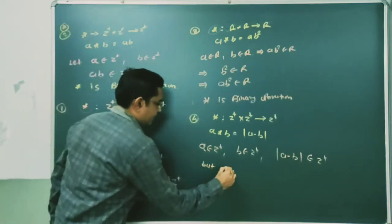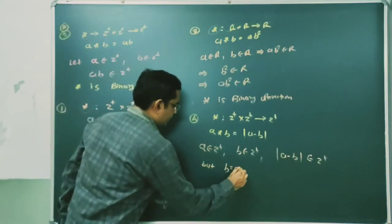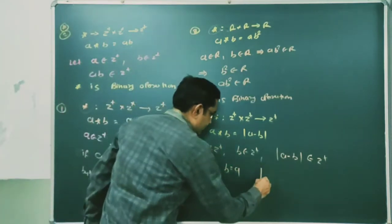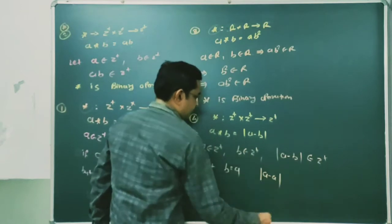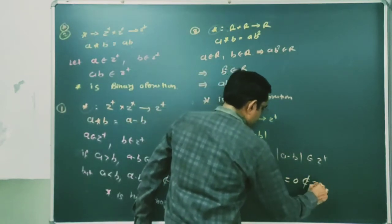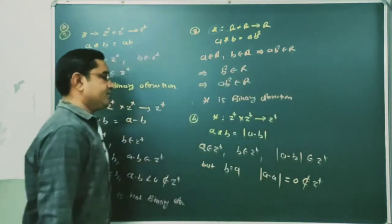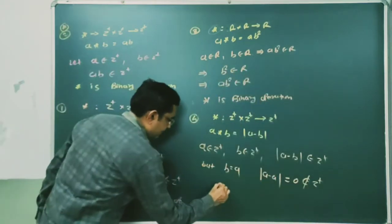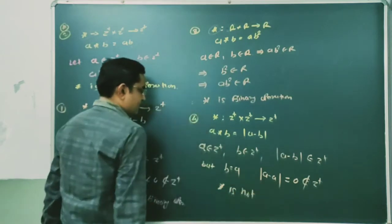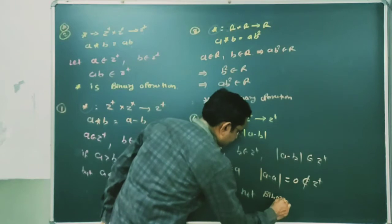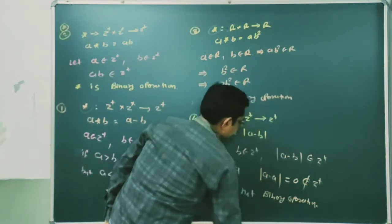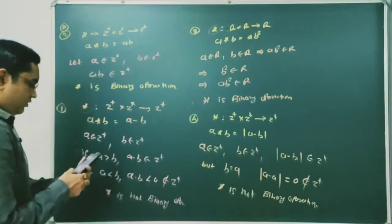But if we consider the case b = a — if a and b are both equal and both are positive integers — then it will be |a − a| = 0. This zero does not belong to the set of positive integers. Hence we can say the binary operation star is not a binary operation.